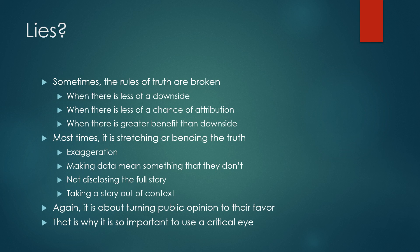In both cases there's a kernel of truth in what they're saying. The data mean A, but what they're also saying is the data mean A, B, and C. While the data may mean A, it's shaky whether it means B, and it flat out does not mean C. Sometimes they're not disclosing the full story — the data means A, B, and C only under certain conditions, and they fail to tell you that. Or they take a story completely out of context. It's about turning public opinion in their favor. That's why it's so important for us to develop a critical eye so we can question what they're saying and demand that they back up their arguments.